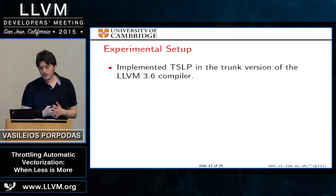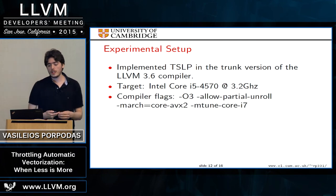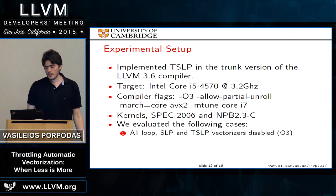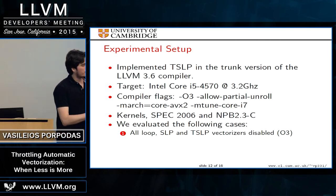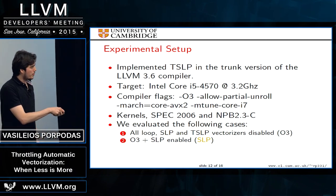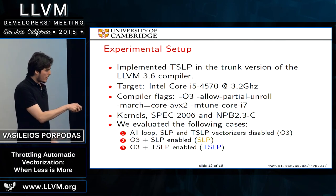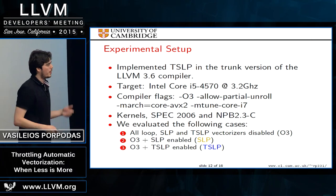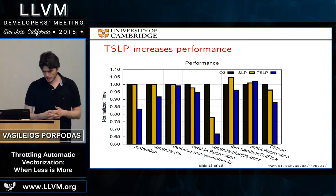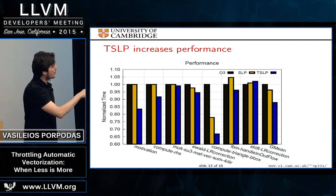TSLP was implemented in LLVM 3.6, targeting a standard desktop processor, with kernels from SPEC and NAS benchmarks. Three configurations were evaluated: O3 with all vectorizers disabled (scalar baseline), O3 with only SLP enabled, and O3 with only TSLP enabled. In the performance results, the black bar is O3, yellow is SLP, and blue is TSLP.